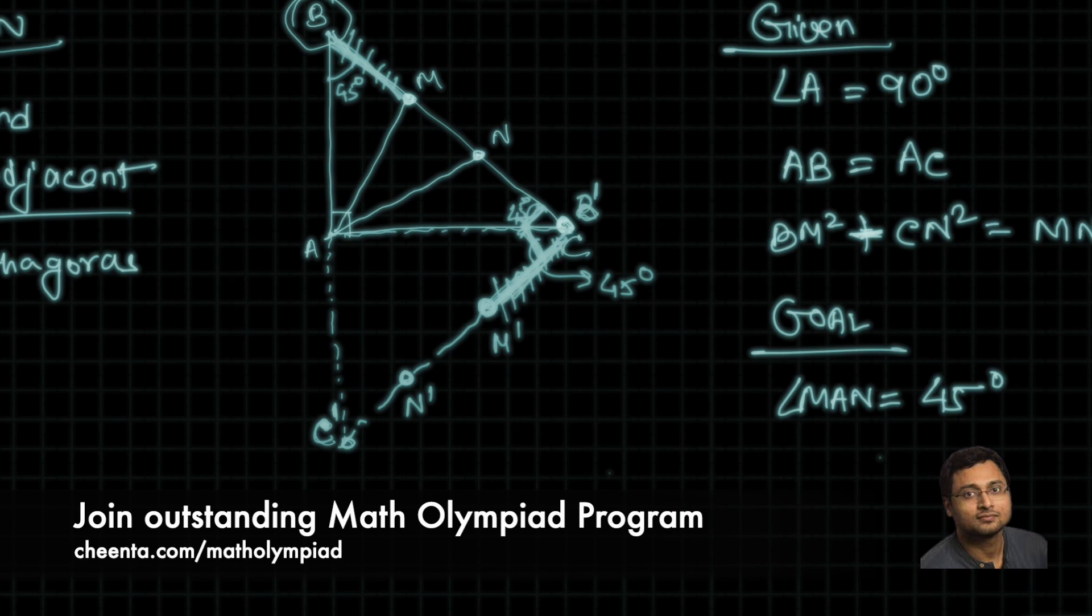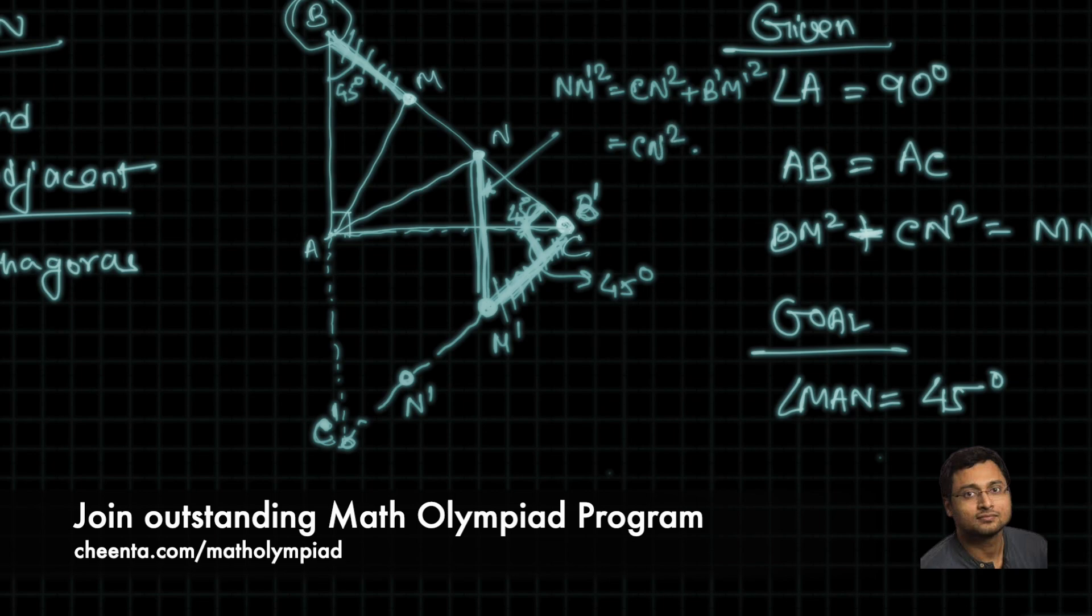So, clearly, if I join NM prime, this length will be NM prime squared will be CN prime squared, CN squared plus B prime M prime squared. But, B prime M prime is equal to BM so this is equal to CN squared plus BM squared. Okay, now CN squared plus BM squared is also equal to MN squared. That was the given data. Now, we find it is equal to NM prime squared. So, MN is equal to NM prime.